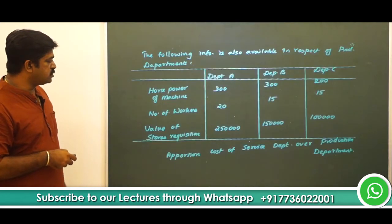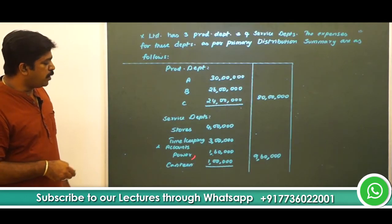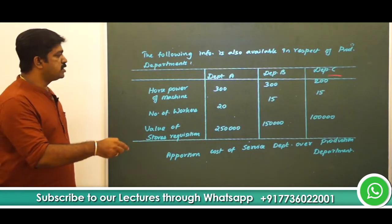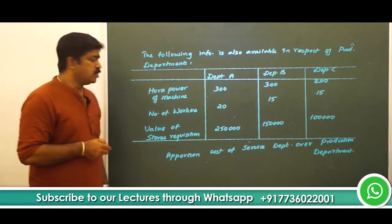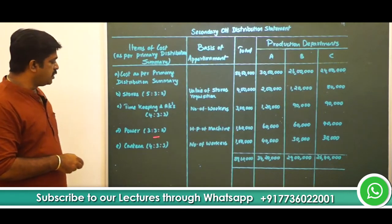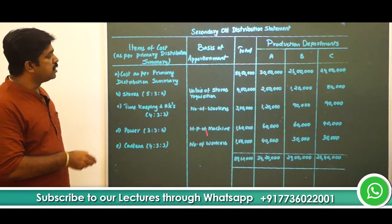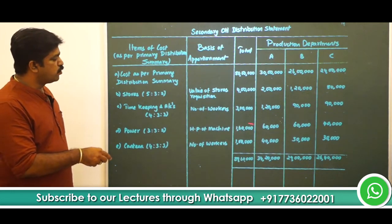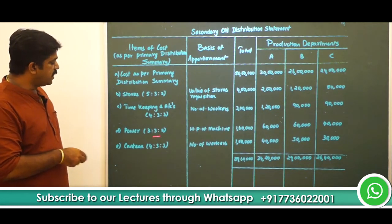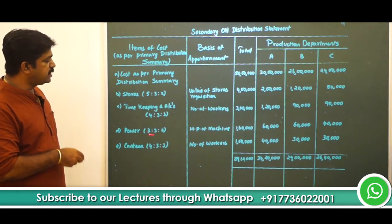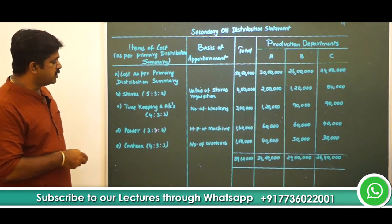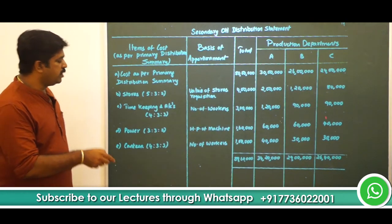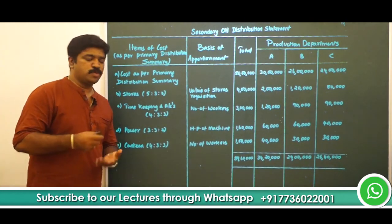The next item is power — 1,60,000. That has to be apportioned on the basis of horsepower, which gives the ratio 3:3:2. The basis of apportionment is horsepower and the total is 1,60,000. So, 1,60,000 divided by 8, multiplied by 3, gives 60,000; multiplied by 3 gives 60,000 again; and multiplied by 2 gives 40,000. In this way, we have apportioned the power cost.